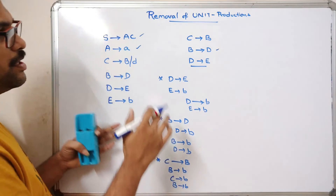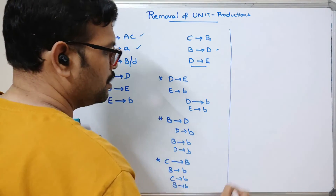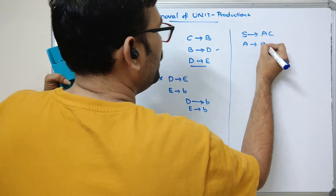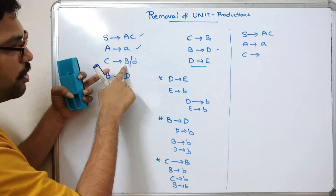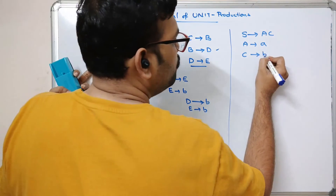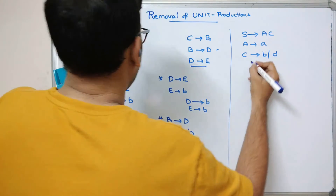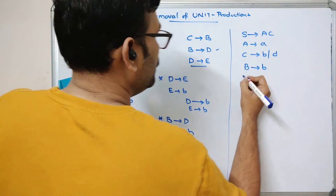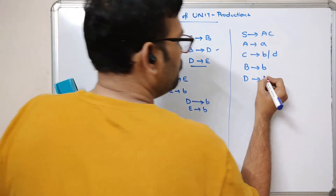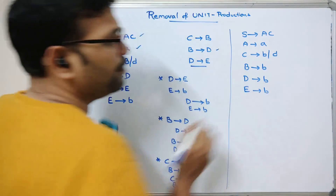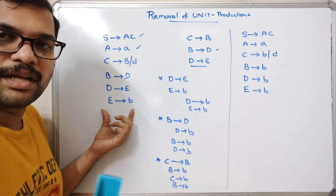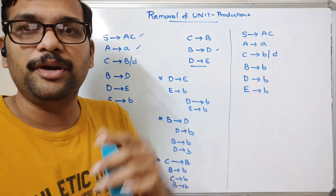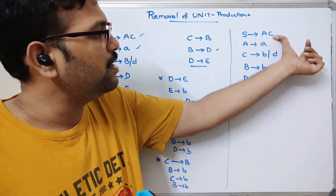Now just replace in the grammar. S→AC, A→a, and C→ instead of B we write the productions: C→ab or C→d. B→b, D→b, E→b. You can observe we are transforming the complete CFG into a simplified CFG by removing the unit productions. Here you can find there are no unit productions remaining.